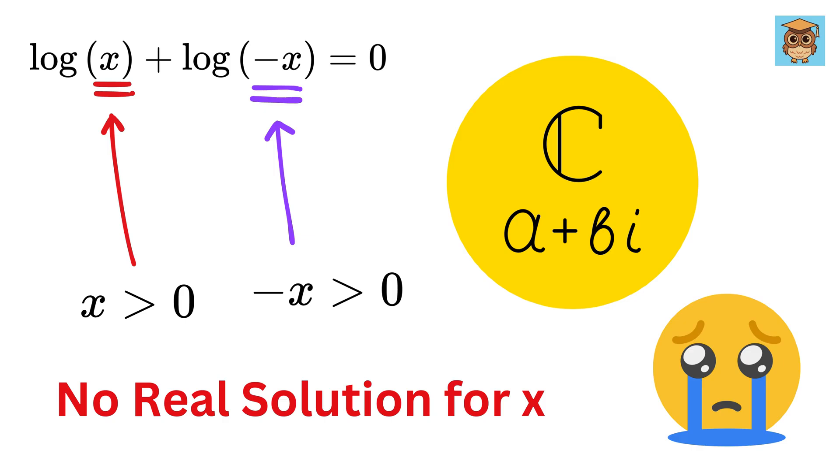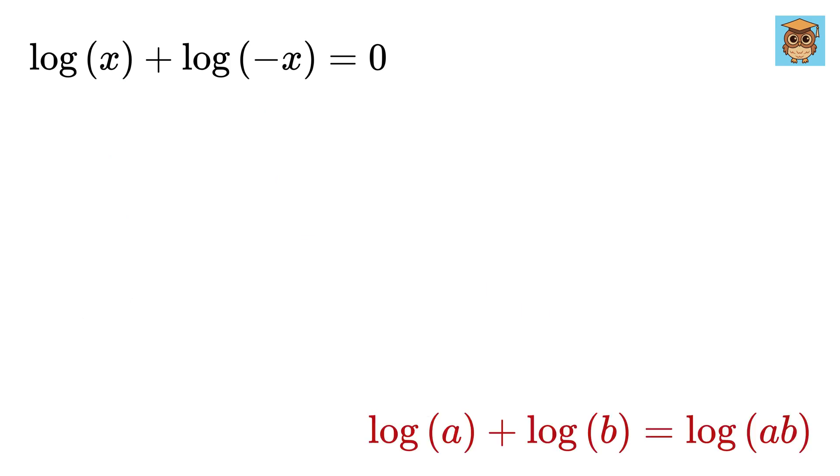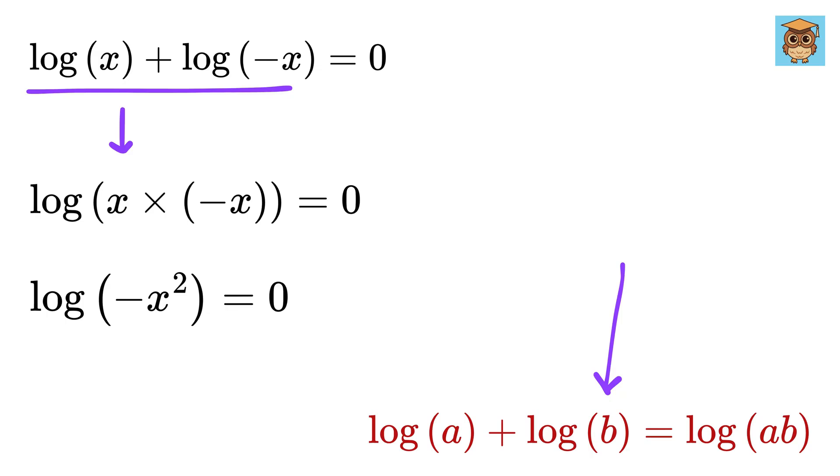Complex world, please save us. Okay, using this property of logarithm, we get this as log of x times negative x, or log of minus x square, and this equals 0.